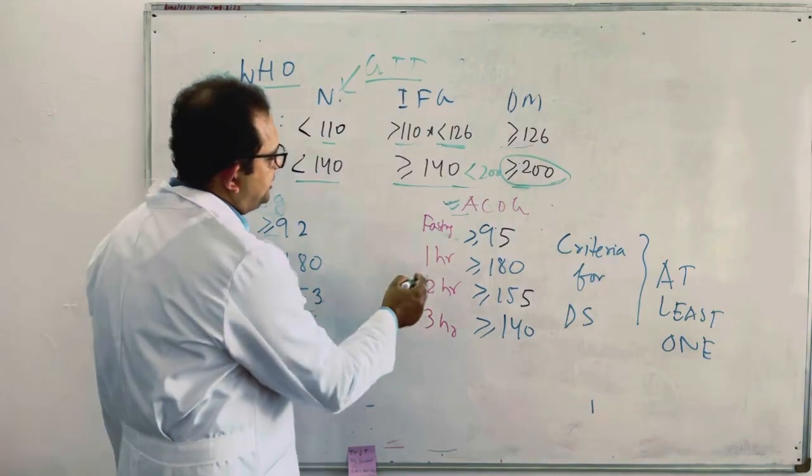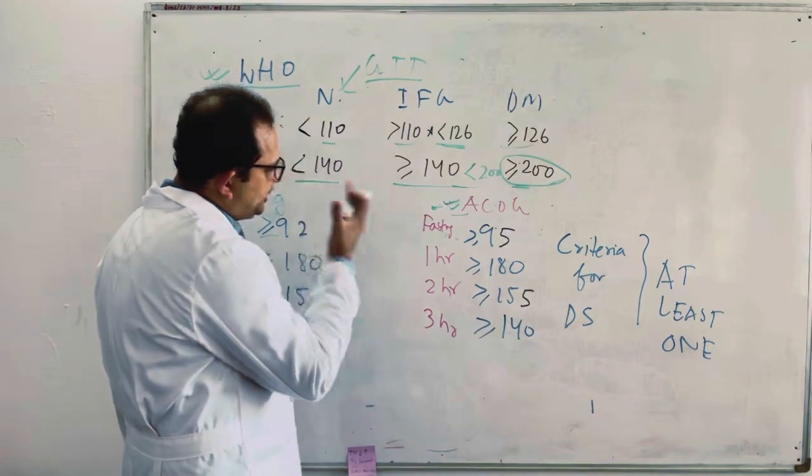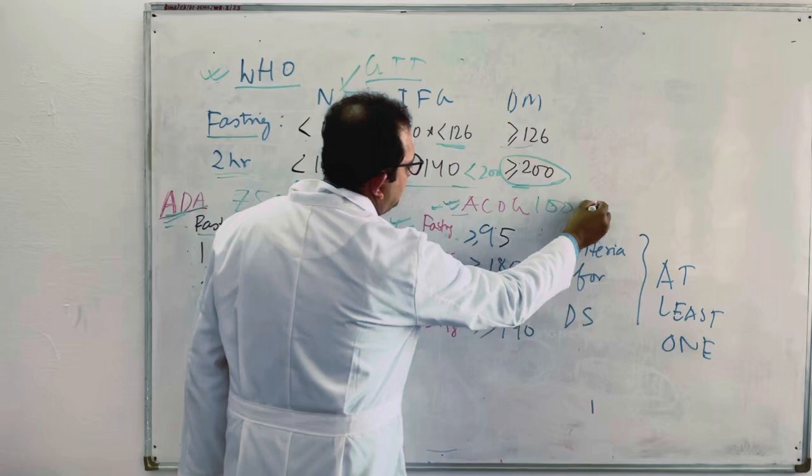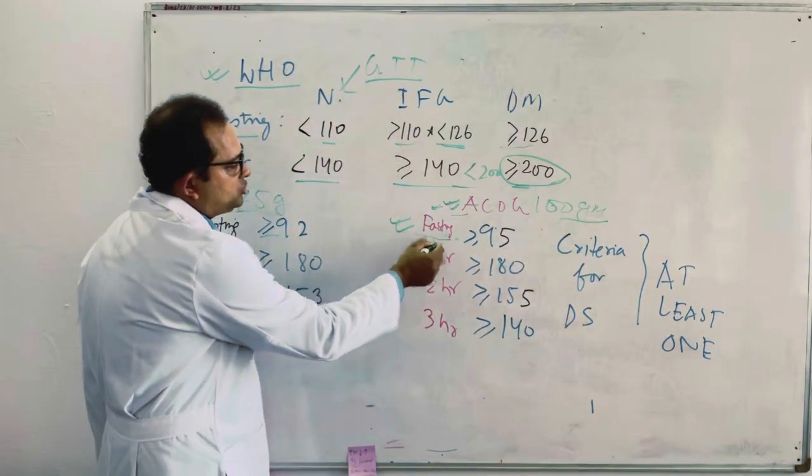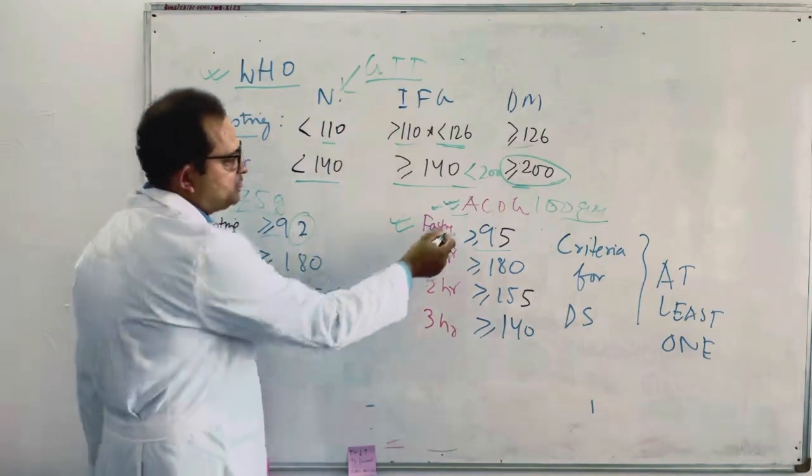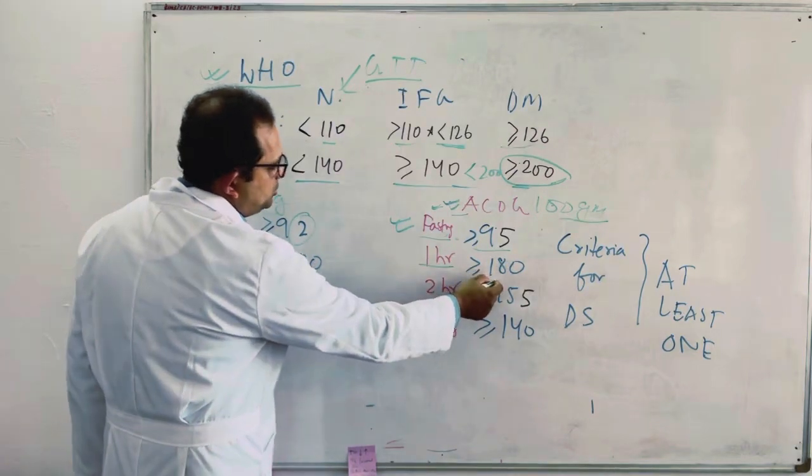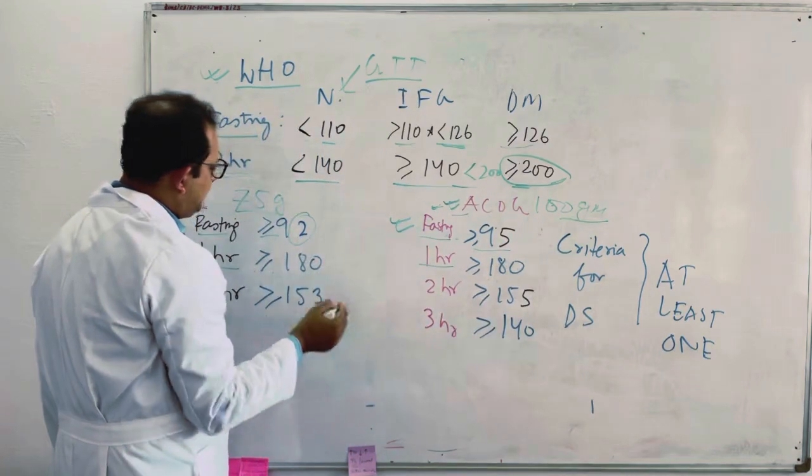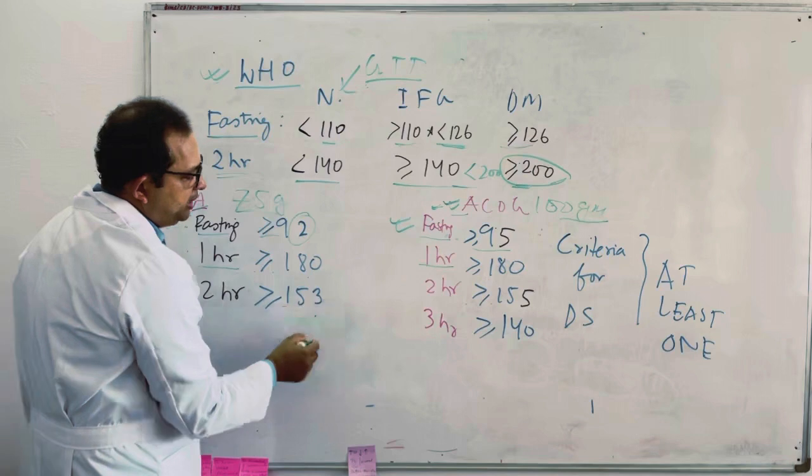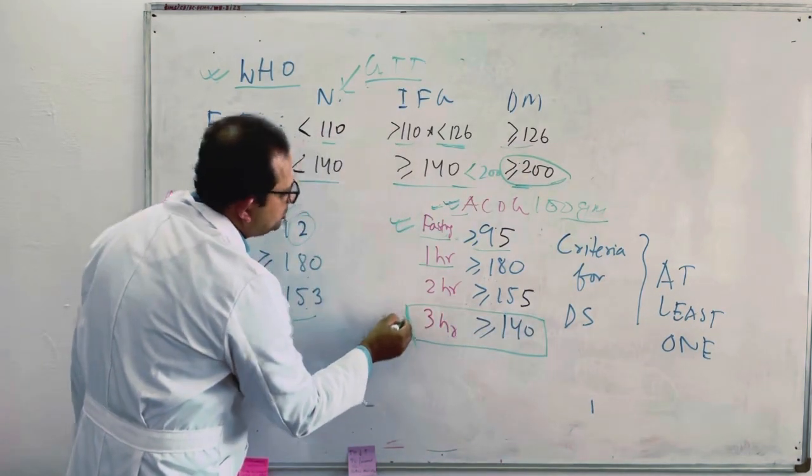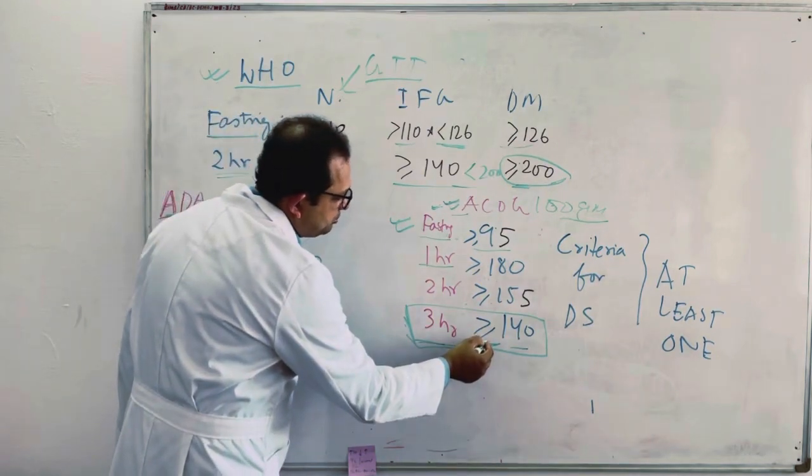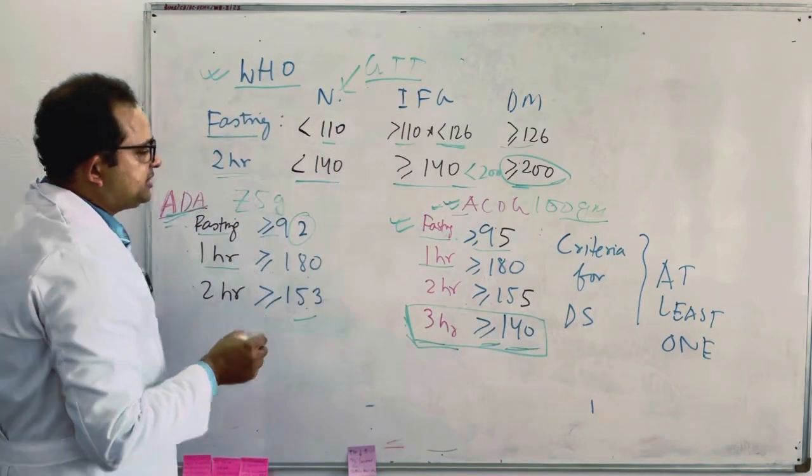Whereas the ACOG criteria is slightly different. So the second step criteria which I have explained to you is considered to be done with 100 grams of glucose. So the fasting value should be if it is more than or equal to 95, here it is 92, so it is a slight difference because we are taking 100 grams of glucose. One hour is equal to 180. So one hour is equal to or more than 180, then she will be diabetic, gestational diabetic. Here also the one hour is 180. Two hour should be equal or more than 155. Here it is 155. The last and final value which is followed by the ACOG is three hour. So the final one is three hour sample. If the value comes more or equal to 140 mg per dl, she will be considered as a gestational diabetic.